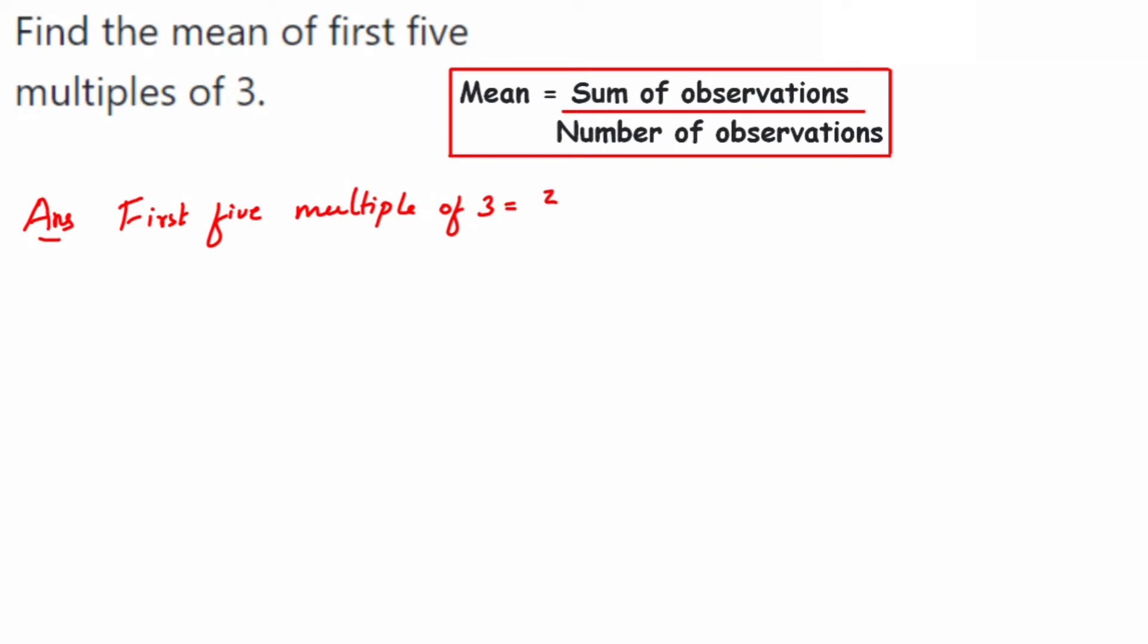The first 5 multiples of 3 are 3, 6, 9, 12, and 15. Now we have to find the mean.